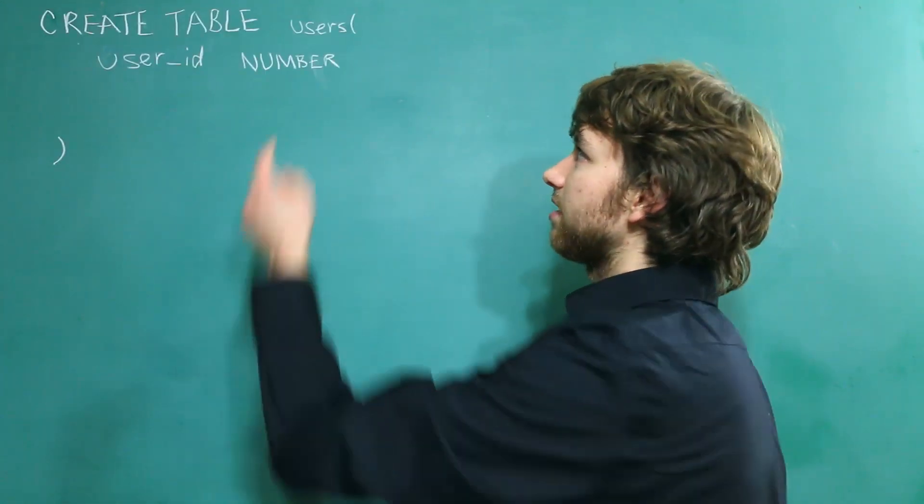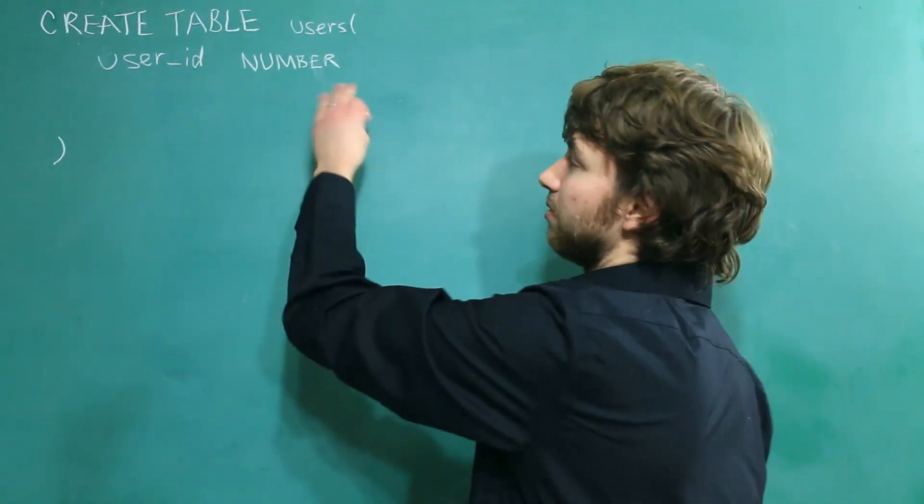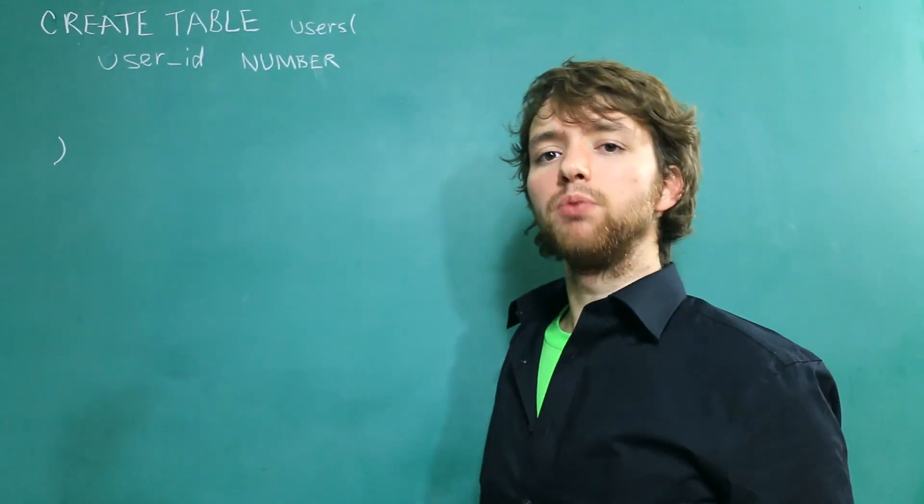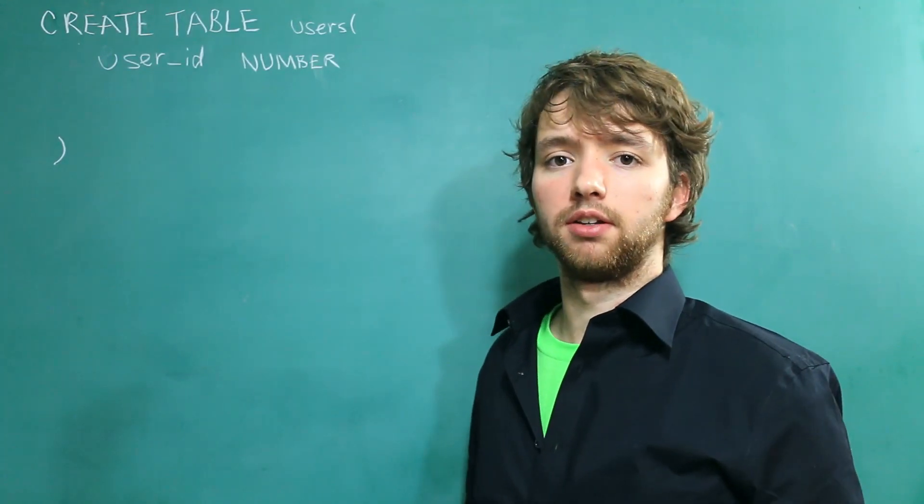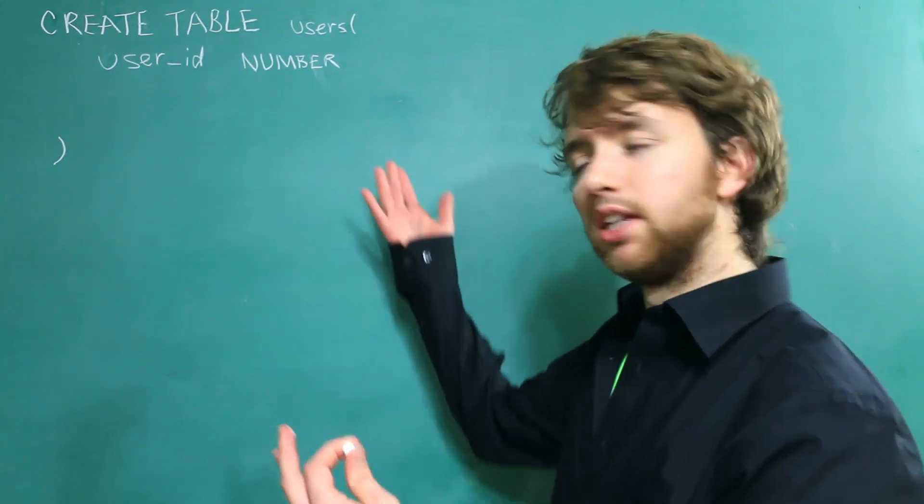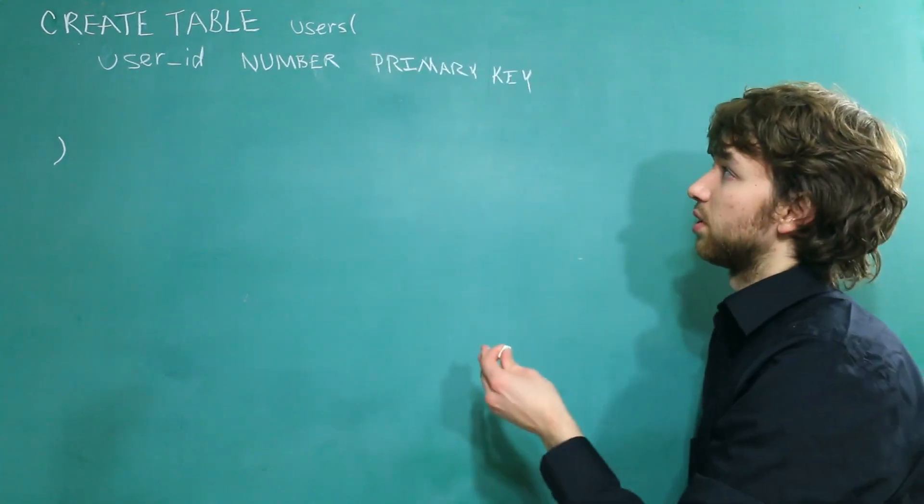We are going to start with a create table statement that looks a little something like this. So we have a table users and it has a column user_id and a data type of number. Now this doesn't actually have any constraints here, but we want to create a primary key. So the way you did that in the previous videos is you just add the keyword right after. Primary key. Pretty simple. So this is what it would look like.